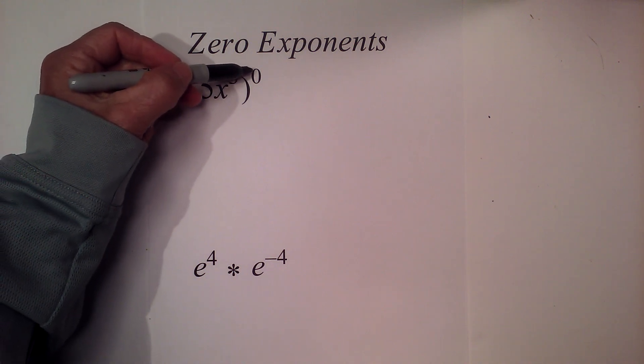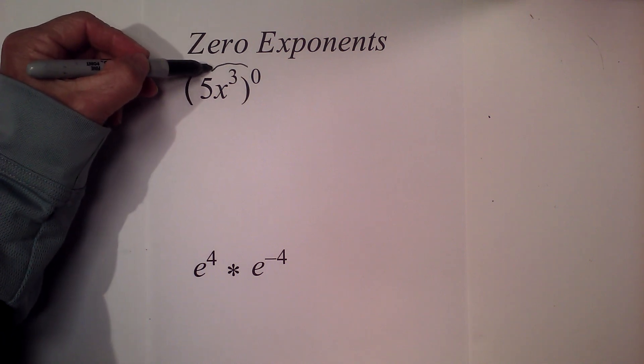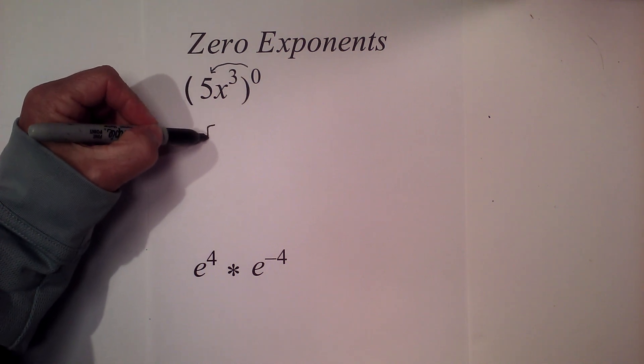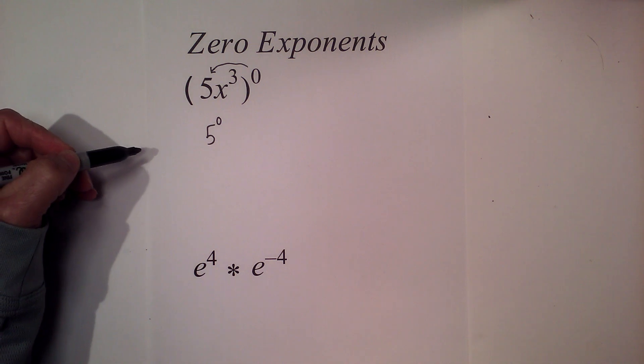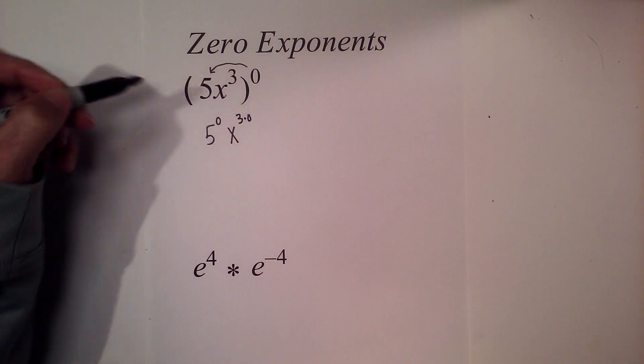We have 5x cubed raised to the zero power. So when I distribute the zero exponent on the outside, it becomes 5 to the zero power, and then it becomes x to the 3 times zero.